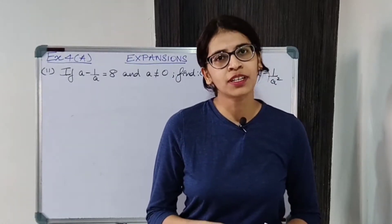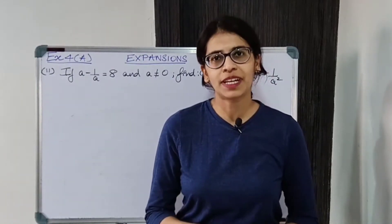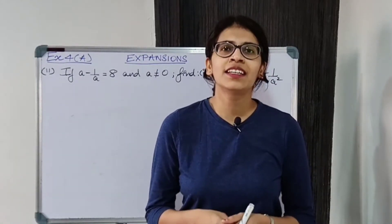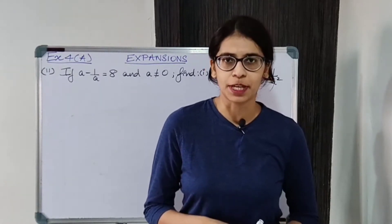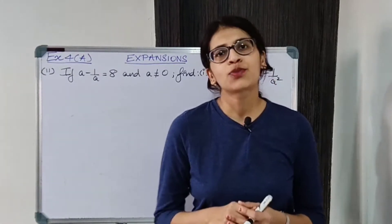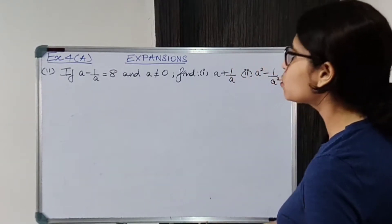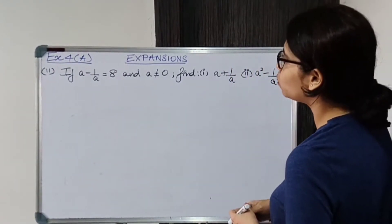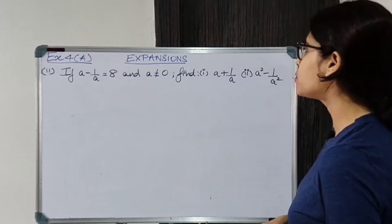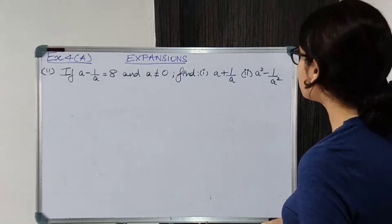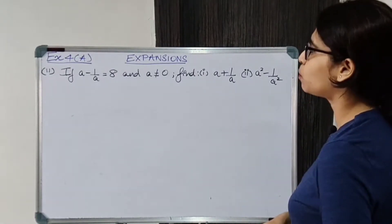Hello everyone, I am Priyanka Shah and welcome to my YouTube channel Mathelite. In this video, we will continue with exercise 4A from chapter expansions. Starting with question number 11: if A minus 1 upon A is equal to 8 and A is not equal to 0, find first part A plus 1 upon A, and second part A square minus 1 upon A square.